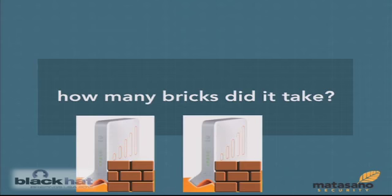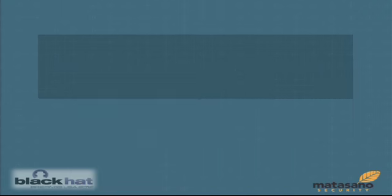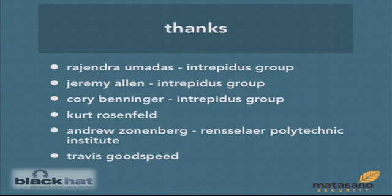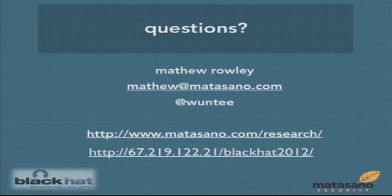So that's it. I feel like I completely destroyed this device — gained physical access, got root, and now have a soft-rooting capability so I don't even need to pull it apart anymore. The answer to the question is: it only took two bricks. I didn't actually have to pay for any of them. Thanks to Raj, Jeremy Allen, Corey Benninger of Intrepidus Group, Kurt Rosenfeld, Andrew Zonenberg, and Travis Goodspeed. The slides and white paper are at the link on the last slide and will also be on the Matasano research page. Any questions?